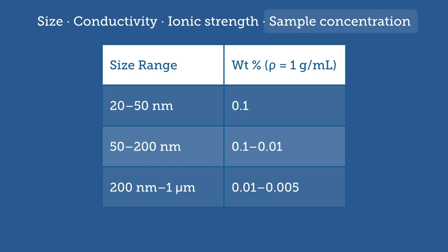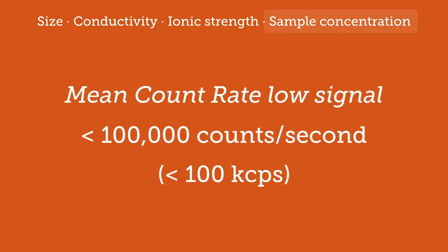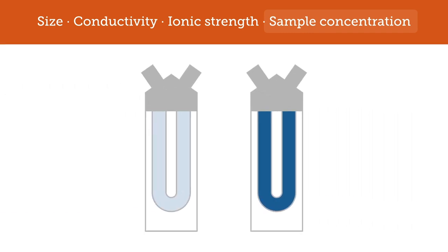When a sample has insufficient signal, the resulting measured zeta potential value is low in magnitude. Low signal is indicated by mean count rates that are below 100,000 counts per second. This can happen due to a sample that is too dilute or a sample that is overly concentrated due to a phenomenon called multiple scatter.